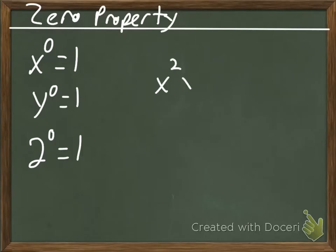So if we had x squared y to the zero, we're going to simplify that by doing x squared times y to the zero power is one. So x squared times one is just x squared. So when you're simplifying these expressions and you see something to the zero power, it just becomes a one.